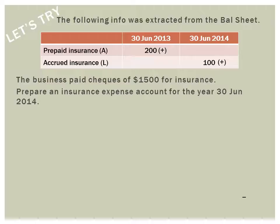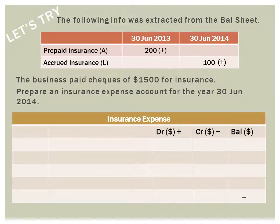The accrual concept states that expenses are recognized when they are incurred, not when they are paid. Whether or not it has been paid doesn't matter — as long as it has been used up, you recognize it as an expense. Likewise for income: income is recognized when it is earned, not when cash is received. So the prepayment done in the previous year is included for this year because you are going to use it this year. The key question is: when are you going to incur it, when are you going to use it? So you add prepaid insurance at the start of the year and the accrued insurance because all these are the expenses for this year.